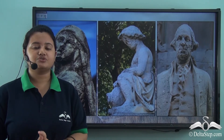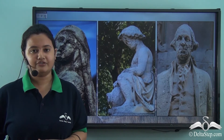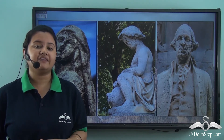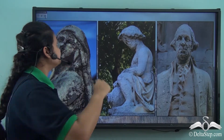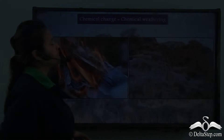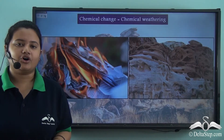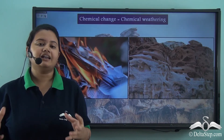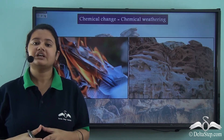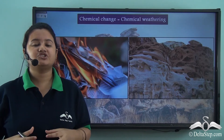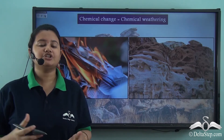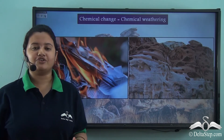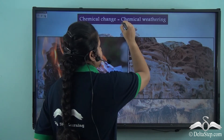Just like these statues, the rocks present on the Earth's surface are also attacked by atmospheric conditions and they are denuded. When the rocks are attacked by atmospheric conditions, the colour and texture of rocks changes — that is, there is a change in the chemical composition of rocks — and this type of chemical transformation in rocks is called chemical weathering.